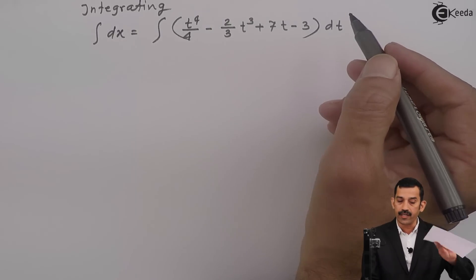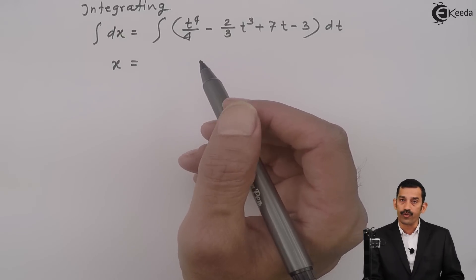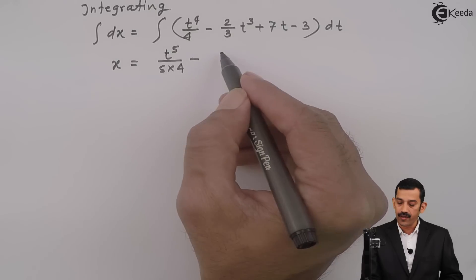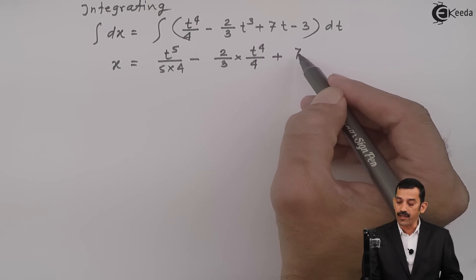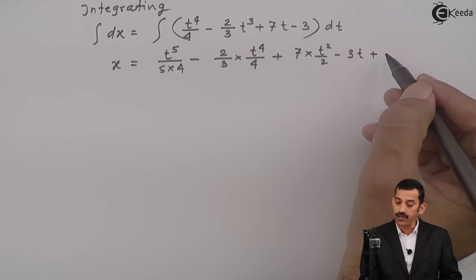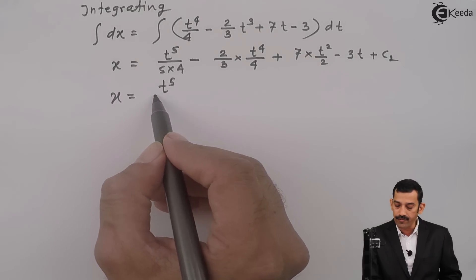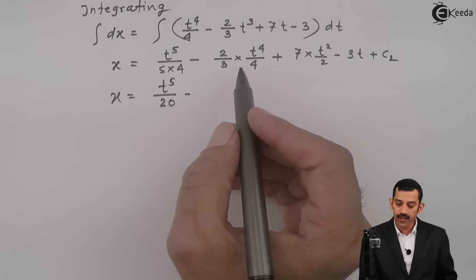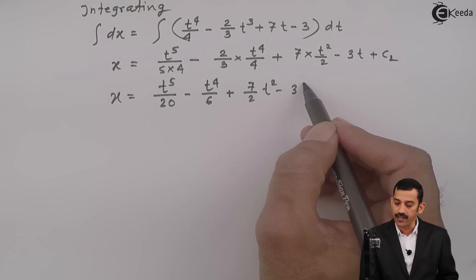Integrating: x = the integral of t⁴/4 gives t⁵/(5×4) = t⁵/20; minus (2/3) times the integral of t³ gives t⁴/4, so we get (2×4)/(3×4) simplifying to t⁴/6; plus 7 times the integral of t gives 7t²/2; minus 3t; plus constant of integration c2. So x = t⁵/20 - t⁴/6 + 7t²/2 - 3t + c2.